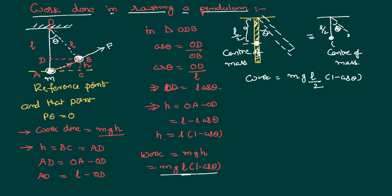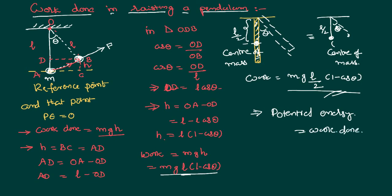Of course, we can clearly say that this work done itself will be stored in the format of potential energy. So, at the mean position there is no potential energy. When the pendulum has gone to that particular position, this work done is equal to the potential energy stored.